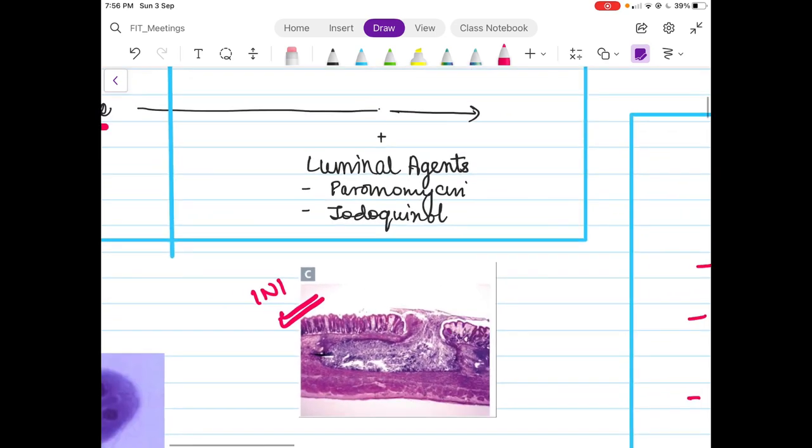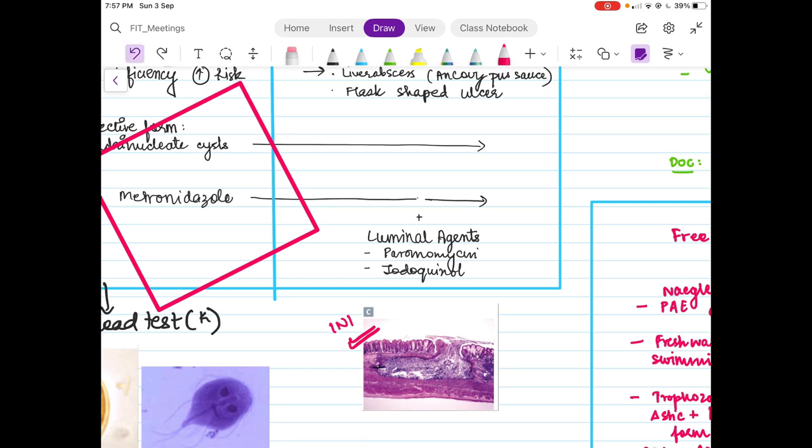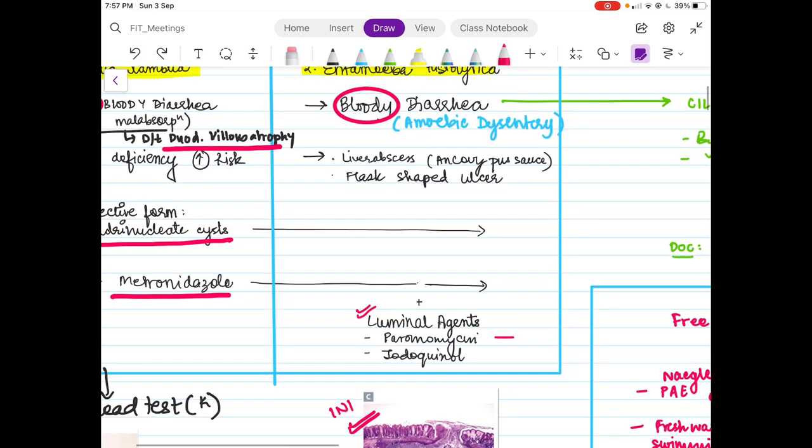The infective form is quadrinucleate cyst for both. The treatment is metronidazole for both. Apart from that, for Entamoeba histolytica, you need to add luminal agents as first Entamoeba affects the intestine and then invades and goes into the liver and causes amoebic liver abscess.